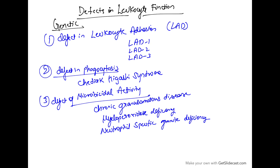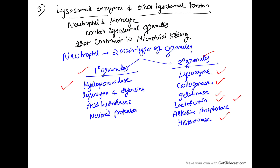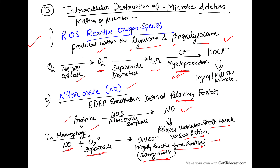There are some defects in leukocyte functions — genetic defects. The defect in leukocyte adhesion includes leukocyte adhesion deficiency types 1, 2, and 3. The defect in phagocytosis is Chédiak-Higashi syndrome. And the defect in microbicidal activity includes chronic granulomatous disease or myeloperoxidase deficiency. We read about myeloperoxidase earlier — how it is involved in the creation of HOCl⁻, which leads to killing of the microbe.